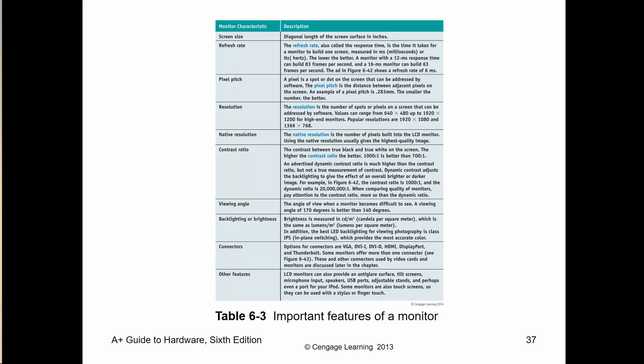Key things to know about monitors include screen size, refresh rate, pixel density, resolution versus native resolution, contrast ratio, viewing angle, backlight, and connectors. Viewing angle indicates where you can position the monitor. Contrast ratio relates to the ratio of contrast, and resolution defines the display resolution and pixels per inch.